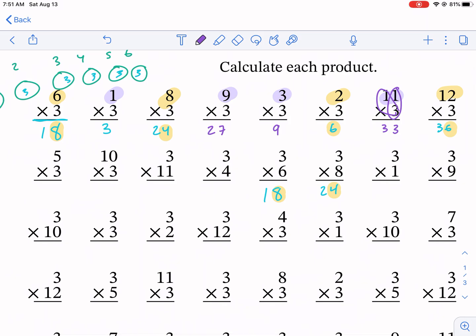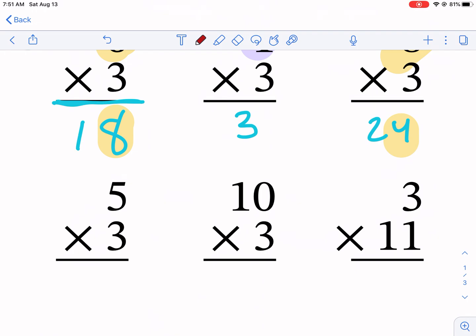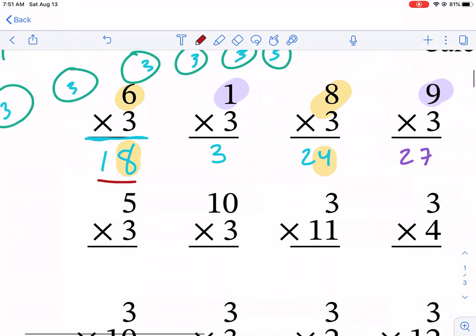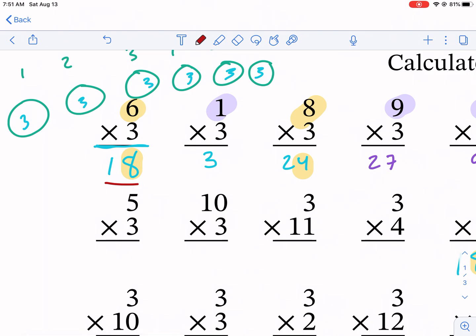The other thing to know about the 3, this is the last thing. This took me a long time to figure out, or actually for one of my teachers to tell me, is if you add the digits, and this is kind of an advanced thing, so if this goes over your head, don't worry about it. But if you add the digits for the product of 3, it's going to also be divisible by 3.